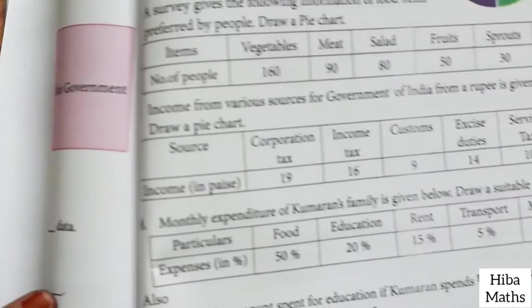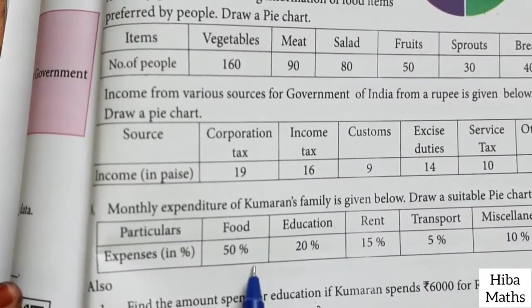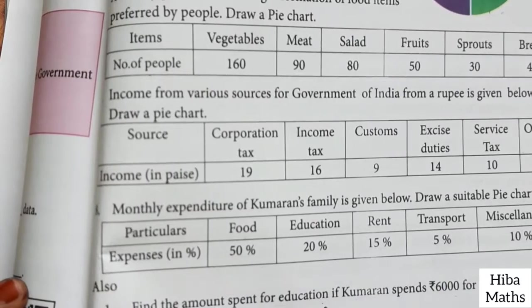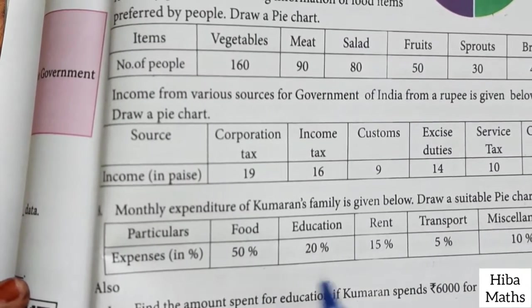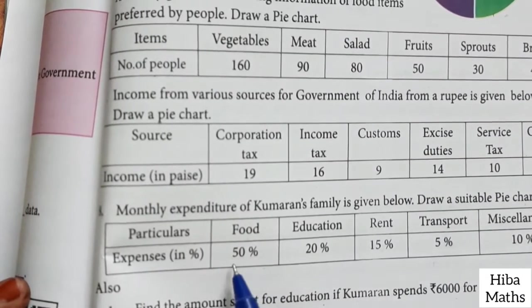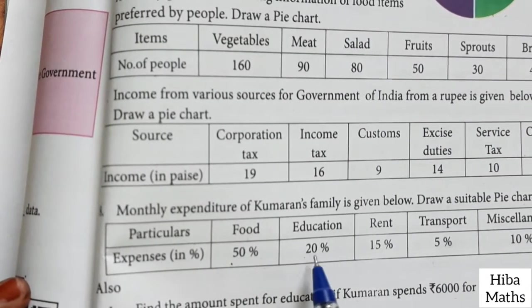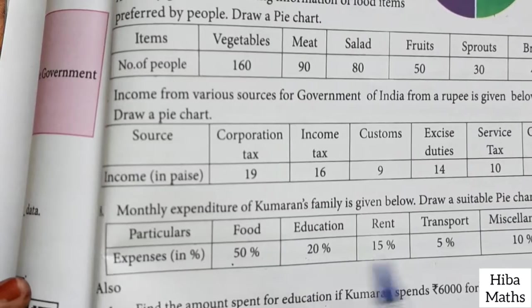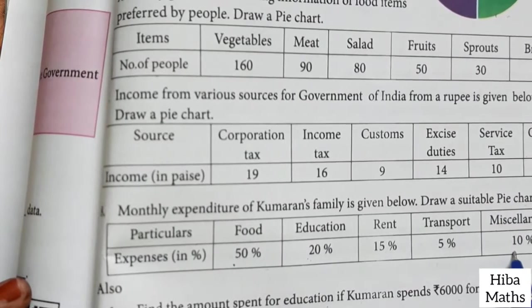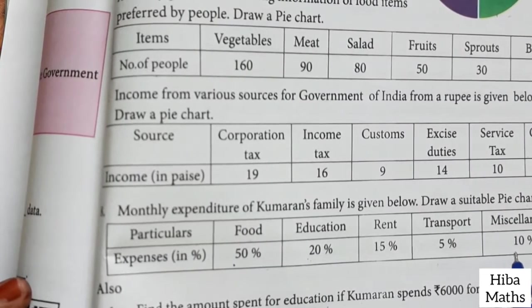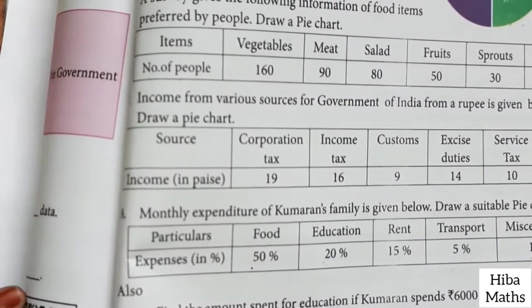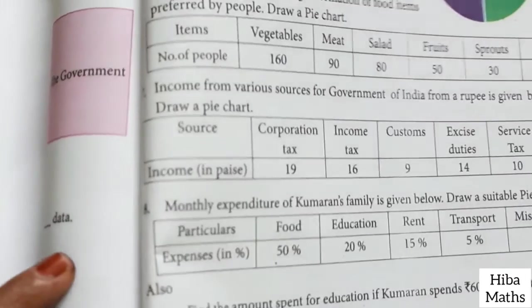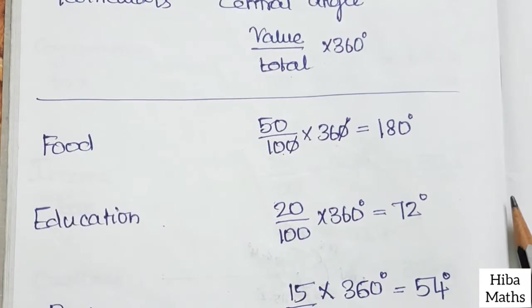The total of all percentages is 100. So 50 plus 20 is 70, 70 plus 10 is 80, and adding 15 and 5 gives 95 plus 5 is 100. So the total is confirmed as 100.